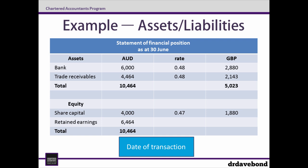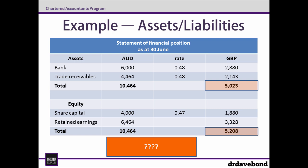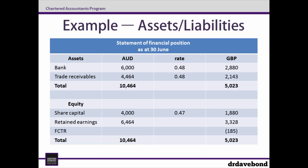Retained earnings isn't translated, but is brought in from our earlier work on the statement of profit or loss. If we add up share capital and retained earnings, we end up with £5,208. But this doesn't equal the translated net assets of £5,023. And if there's anything accountants hate, it's a balance sheet which doesn't balance. But there is a way out of this, and that's the foreign currency translation reserve. The FCTR is a balancing item calculated as the amount required to get the translated balance sheet to balance — in this case, negative £185. Any movement in this account will be disclosed in other comprehensive income.